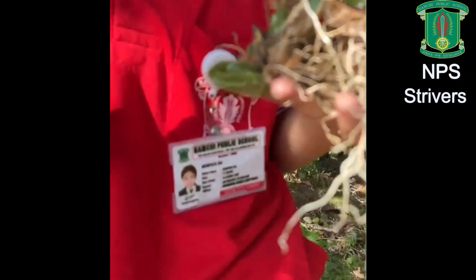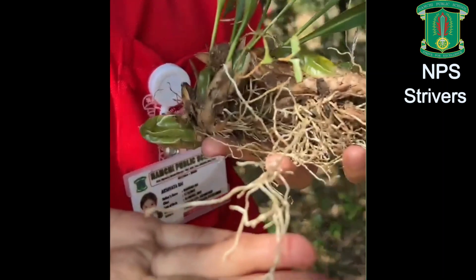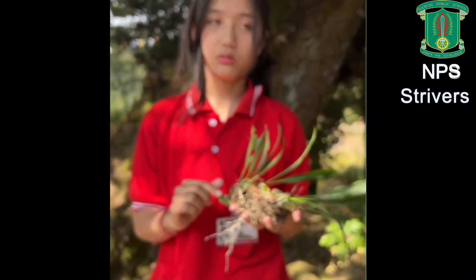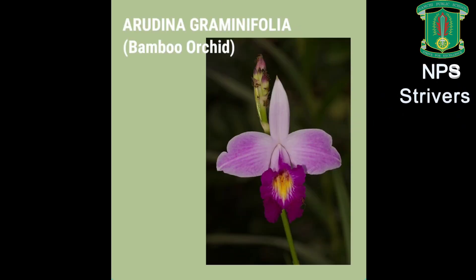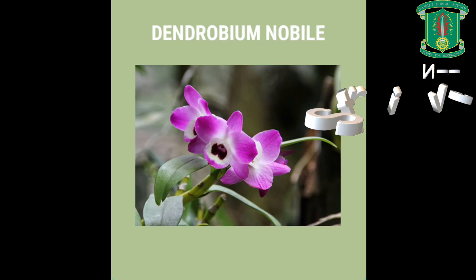Their main characteristic is their hanging-like roots called velamen, which help in the absorption of moisture from the air. Some commonly found local species of orchids other than Coelogyne and Cymbidium include Arundina graminifolia, also known as bamboo orchid, and Dendrobium nobile.